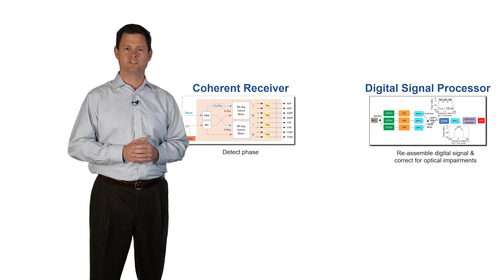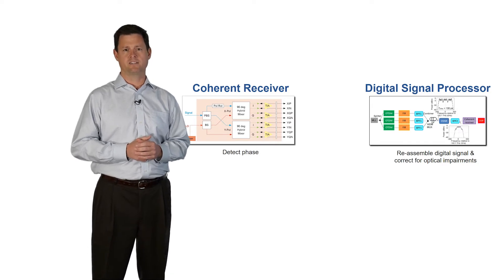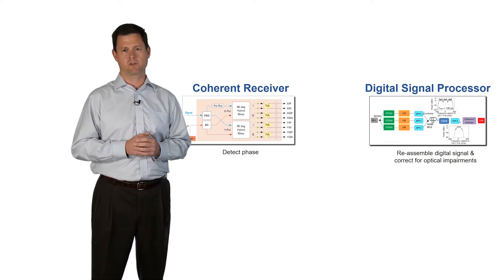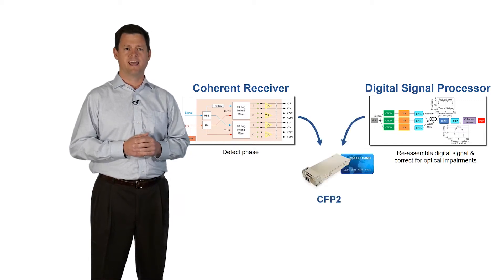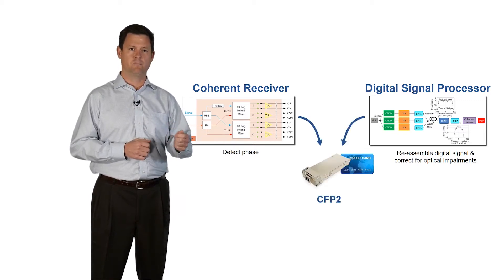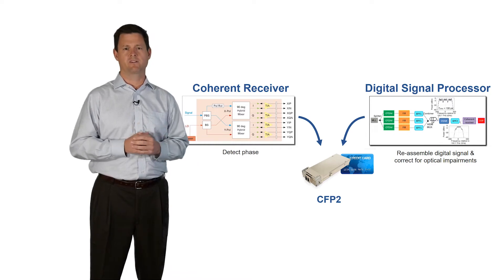There were also new advancements in digital signal processors that could very quickly assemble and analyze all the new data coming from the coherent receivers. Both of these advancements can now be put on a single, small, pluggable module we call a CFP2, that is a little bit bigger than a credit card.